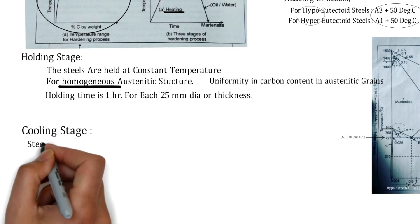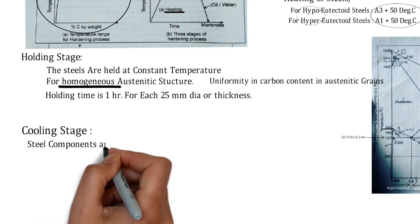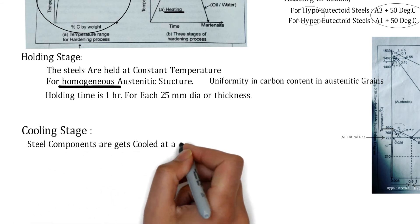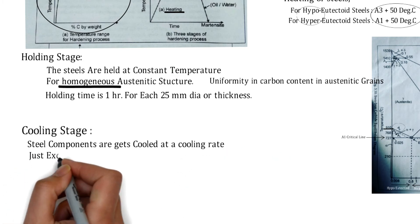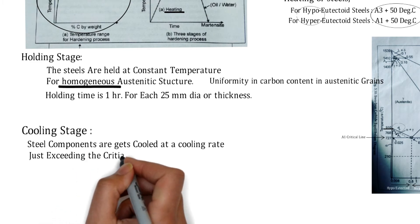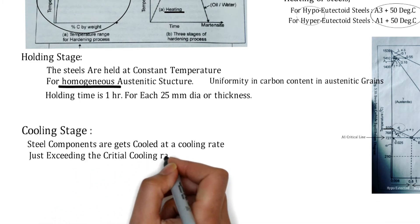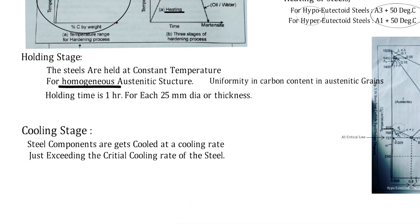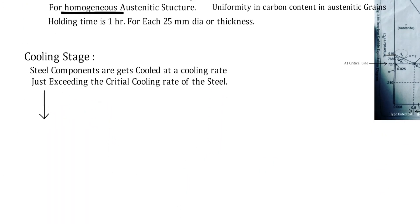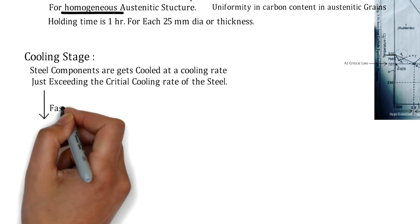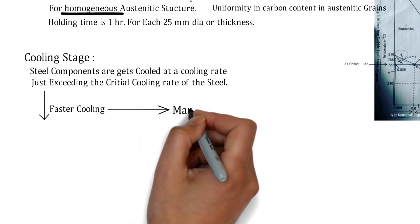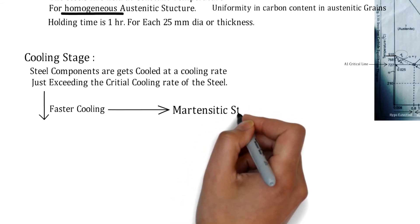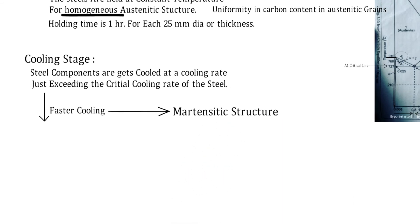After holding comes the cooling stage. The steel components are cooled at a rate just exceeding the critical cooling rate of the steel — typically a faster cooling. This results in the formation of the martensitic structure.